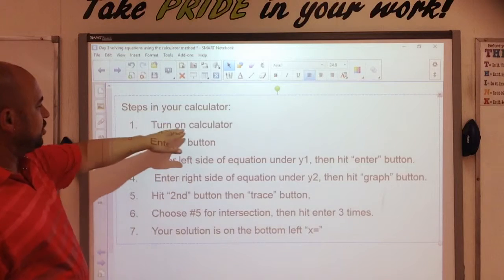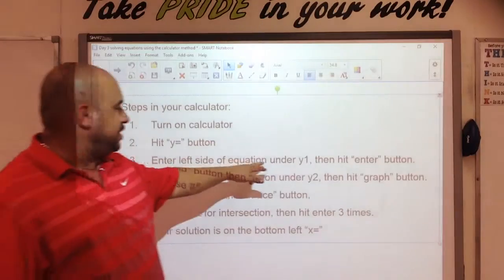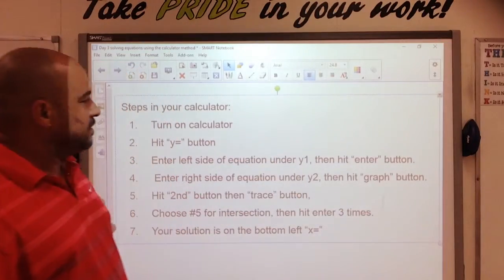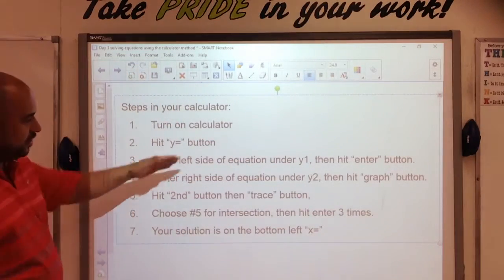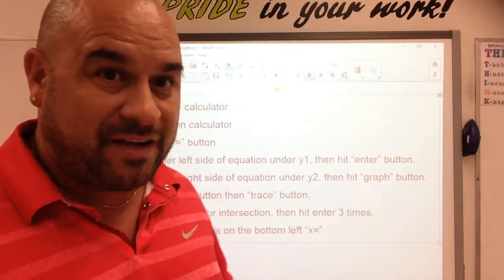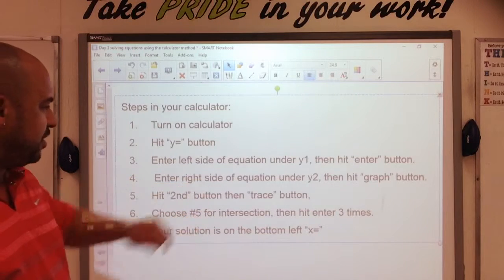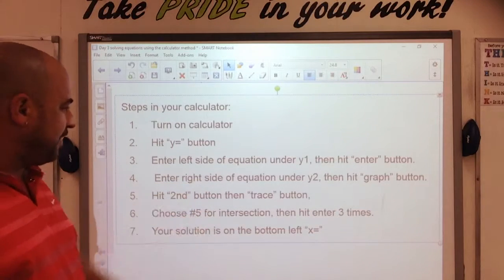Steps in your calculator: you're going to turn it on, hit the y equals button, enter the left side of the equation under y1, then hit enter. Then enter the right side of the equation under y2, then hit the graph button. Then hit the second button and trace. Choose number five for the intersection and hit enter three times.